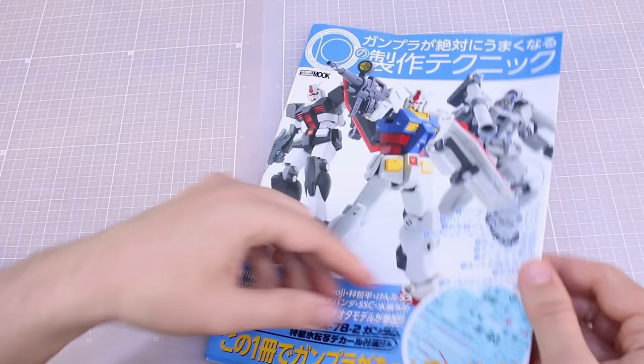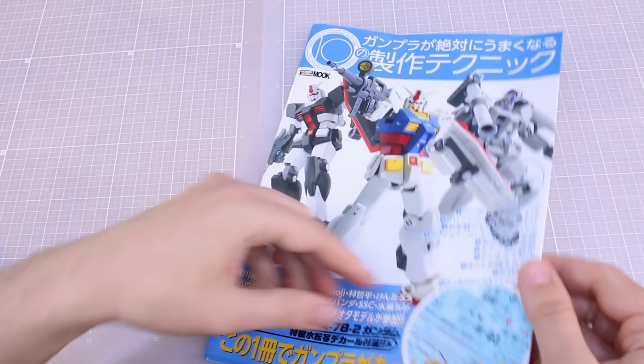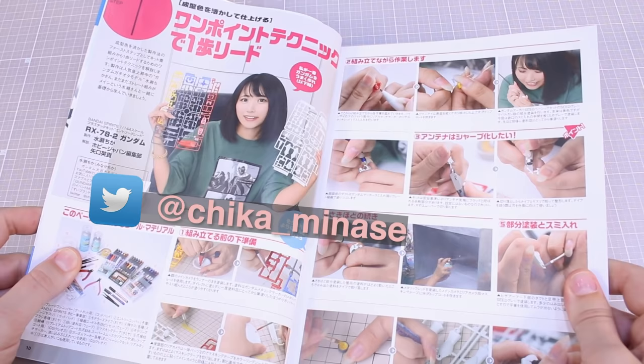This video is going to be based off of the one point technique as demonstrated in step one of Hobby Japan's 10 modeling techniques for all Gunpla builders. If you'd like to see my full review of this book, click in the little i above there. And as with all the steps in this wonderful little book, we're going to be using the entry grade RX-78-2 Gundam of which there's two versions.